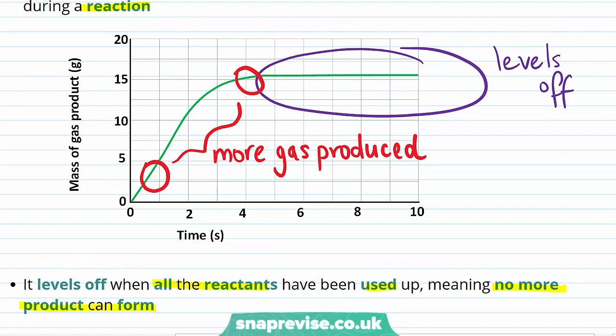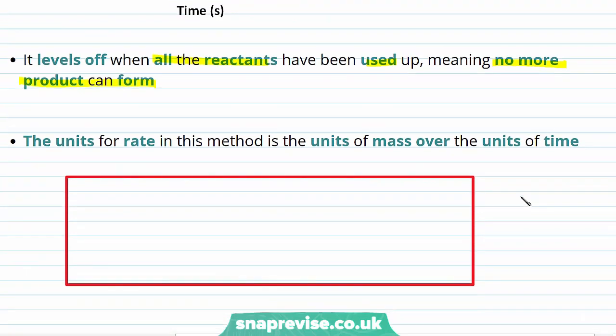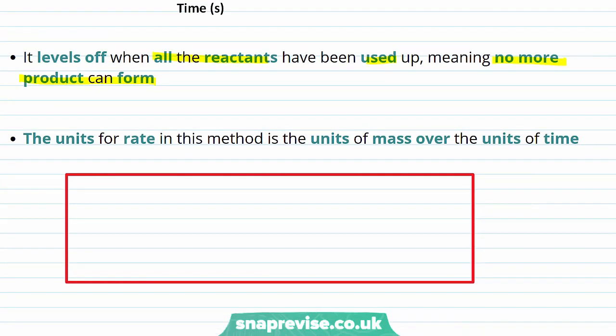At the beginning of the video, we defined the rate of reaction as a measure of change of concentration of the products or reactants per unit time. When calculating a rate using this method, the units for rate will be the units of mass divided by the units of time.